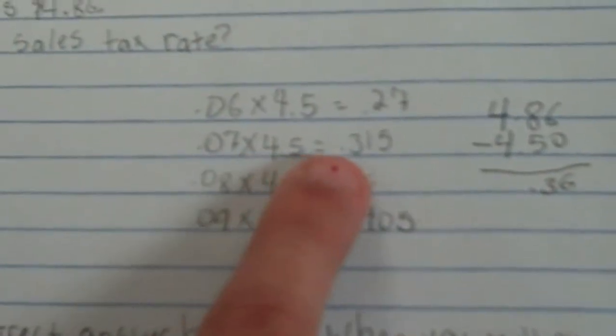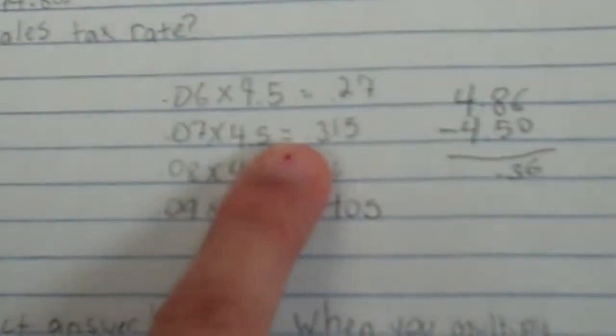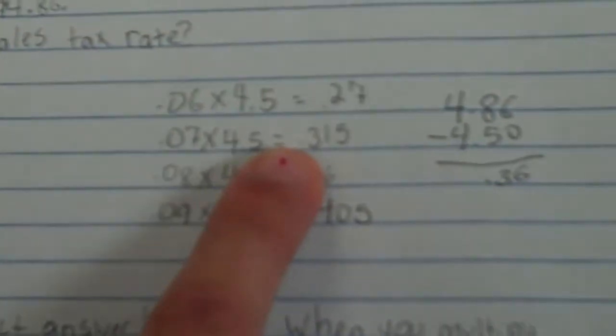And then when I times it by 7%, I got 0.315, which would have been 32 cents, which still isn't enough.